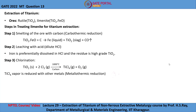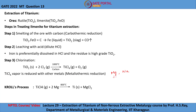This TiCl4 vapor is further subjected to metallothermic reduction — that is, it is reduced with other metals such as magnesium or sodium. When magnesium is used as the reducing agent, it is called Kroll's process. When sodium is used as the reducing agent, it is called Hunter's process.